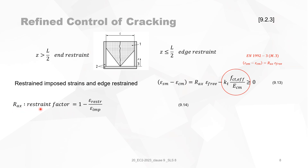Rx is the restraint factor, explained in Annex B of Eurocode 2023. It equals 1 minus (epsilon restraint divided by epsilon imposed). You can calculate it if you have enough data, but in most cases you don't. The maximum is more or less 0.5 in most cases, so taking Rx as 0.5 is not a big mistake.